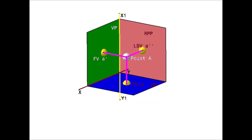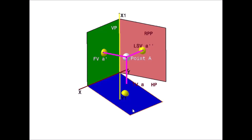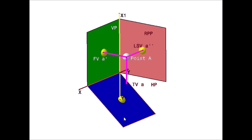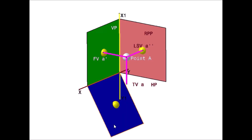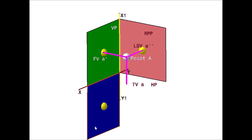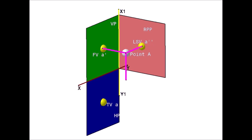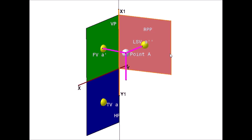After capturing these views, rotate the horizontal plane along with the top view A clockwise like this. Also rotate the right profile plane along with the left side view A double dash, so that all three views are on the same plane — aligned with the vertical plane.